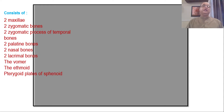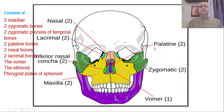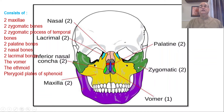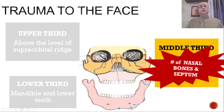The middle third of the face contains the right and left maxilla, two palatine bones which form the floor of the nasal cavities, and two inferior turbinates in the lateral wall of the nose. It has two zygomatic arches on either side along with the zygomatic process of the temporal bones. In the nasal septum there is one vomer, the perpendicular plate of the ethmoid, and the pterygoid plates of the sphenoid. Today we will focus on the nasal bones and the nasal septum.